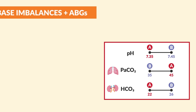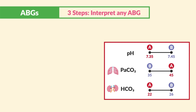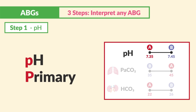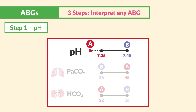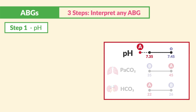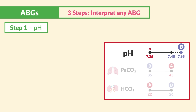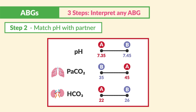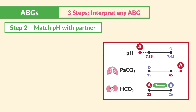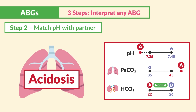Using three steps to interpret any ABG: Step one — always look at pH first, because pH is primary. Less than 7.35 is A for acid; over 7.45 is B for base/alkalosis. Step two — we match the pH with the partner below. If pH is acid and CO2 is acid as well, and HCO3 is in normal range, the two acids with pH and CO2 match — that's respiratory acidosis, since the lung icon tells us it's a respiratory problem.